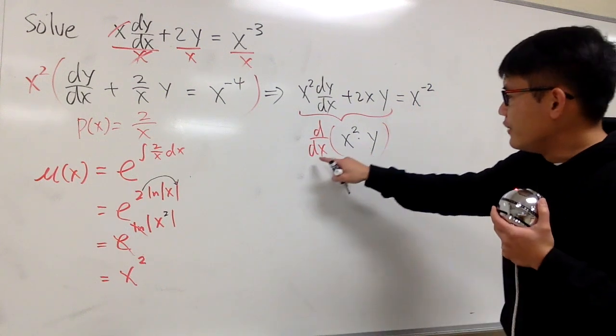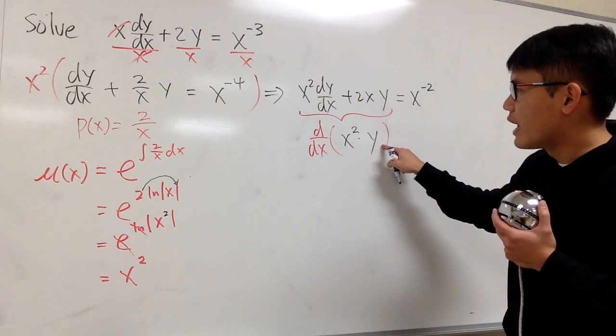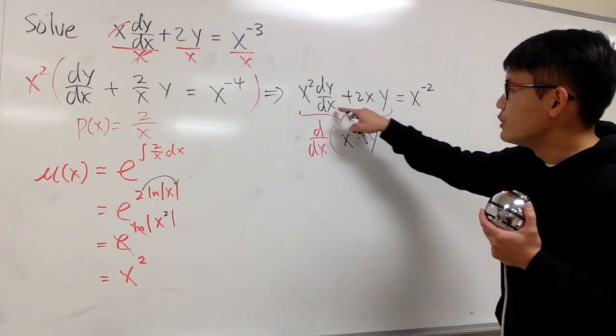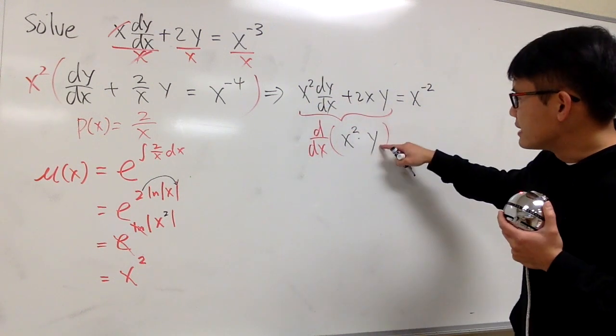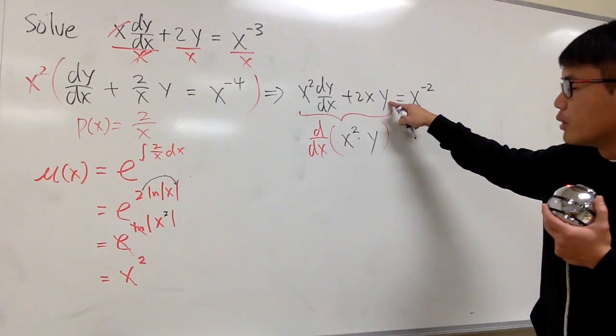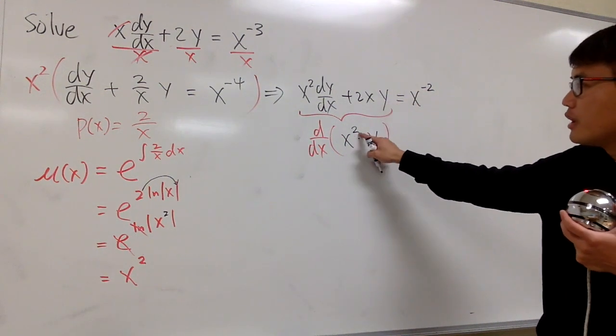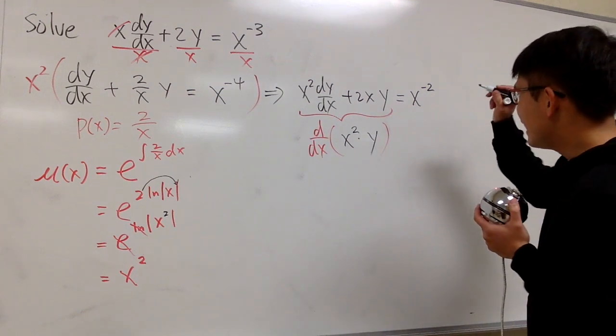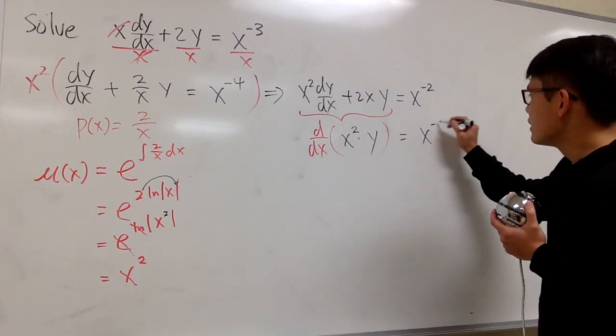And you can double check. If you take the derivative of x squared times y, you keep the first function, and you multiply by the derivative of second, which you get the dy dx. And you add. You keep the second function, which is y. And you multiply by the derivative of x squared, which is the 2x. So nice, isn't it?